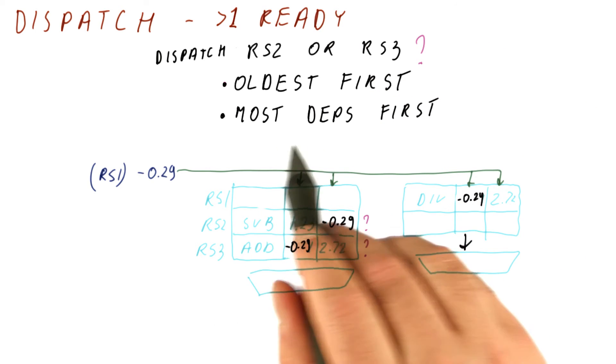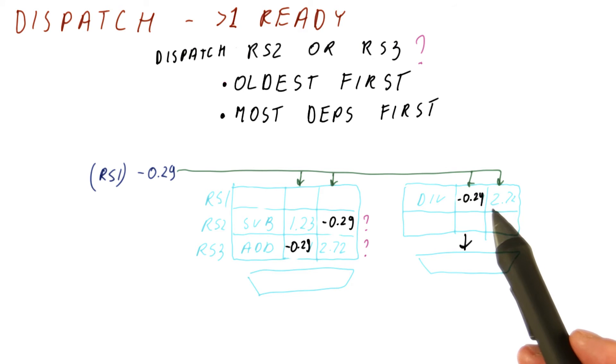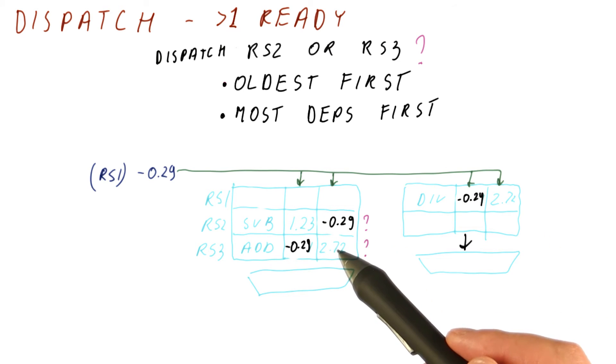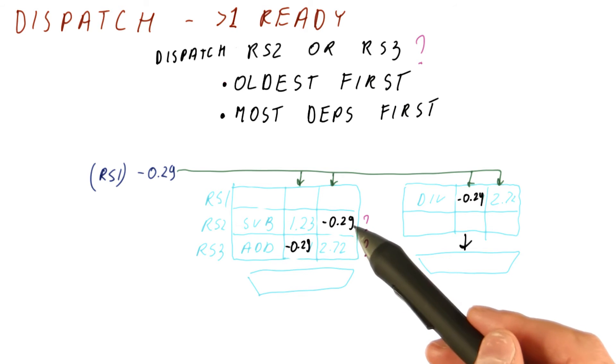Another one that could be used is something like most dependencies first, where we would check how many other instructions need the value from each one of these and then dispatch the one that will free up the most of the other instructions.